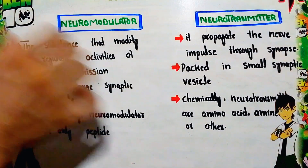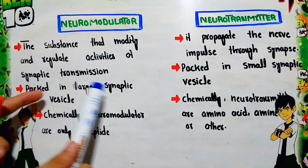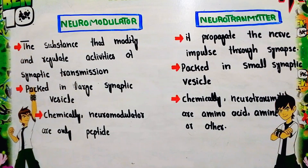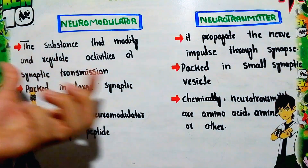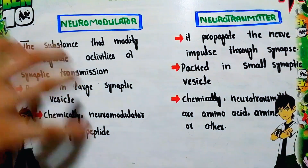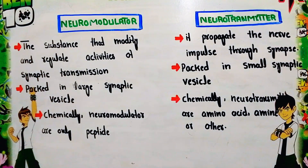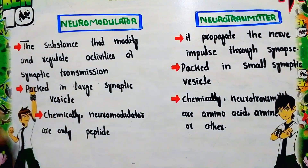Another difference: neuromodulators are found in large synaptic vesicles at the presynaptic neuron terminal, while neurotransmitters are found in small synaptic vesicles at the presynaptic terminal ends. Chemically, neuromodulators are mainly made from peptides, while neurotransmitters are made from amino acids, amines, or other substances.